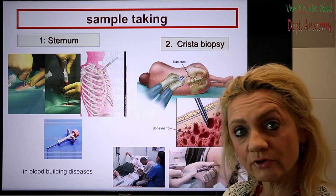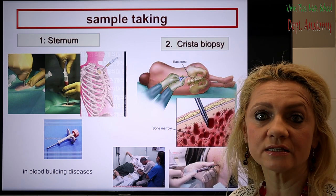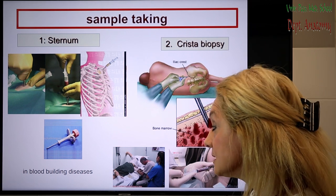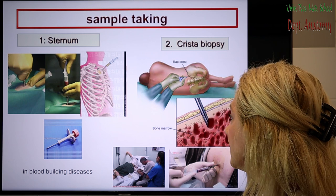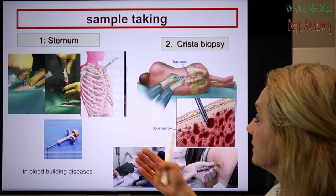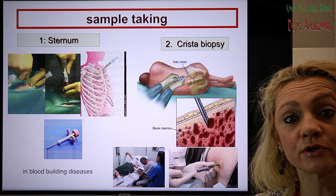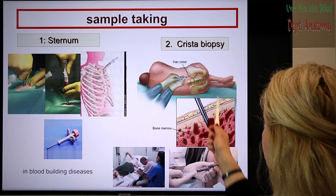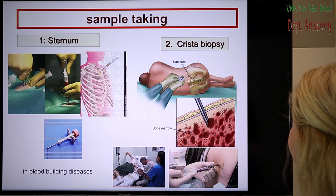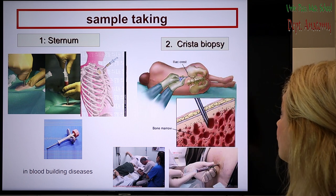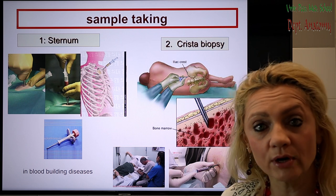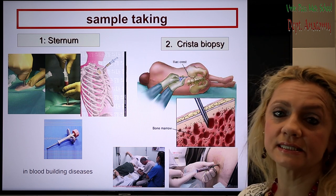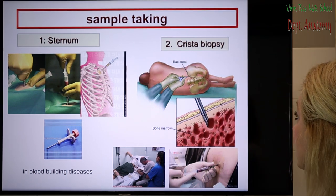We can take samples from the bone marrow, which is often necessary when we suspect diseases of the bone marrow or blood-building diseases. A convenient place is the sternum because it's easily reached. The main place where we take samples from is the iliac crest — this is called crest biopsy — where we can really see the histological structure of the bone marrow.